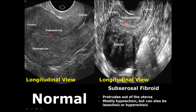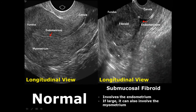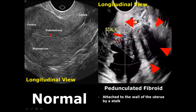The submucosal fibroid involves the endometrium but if large enough can also involve the myometrium. The pedunculated fibroid is present in the endometrial canal and is connected to the endometrium by a stalk — we can see blood flow within the stalk on Doppler scan. Some fibroids can also have calcifications, which produce posterior acoustic shadowing.